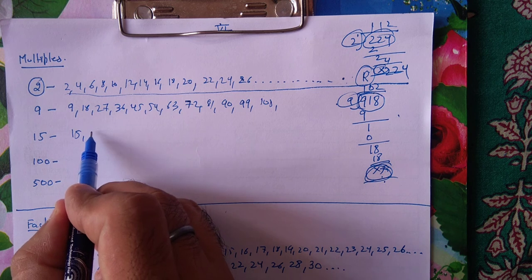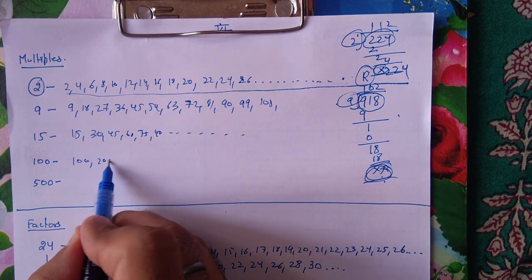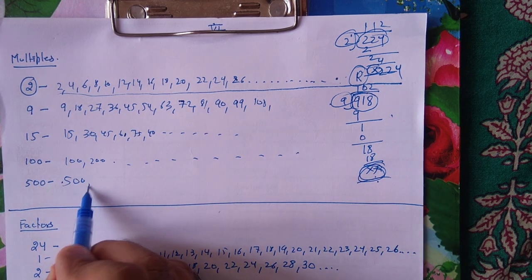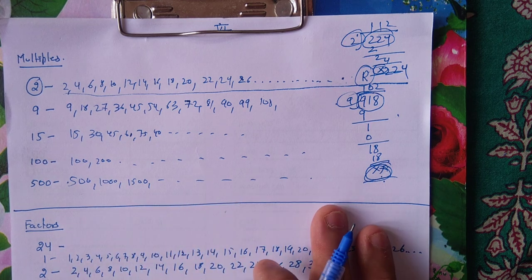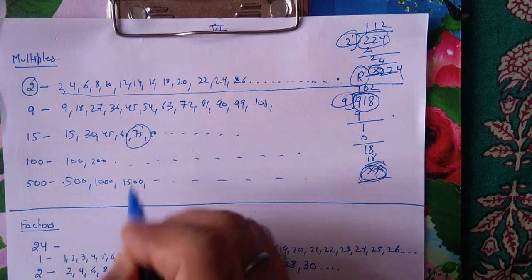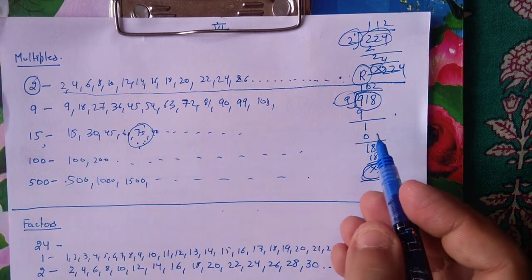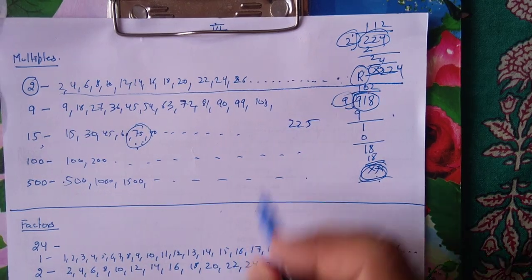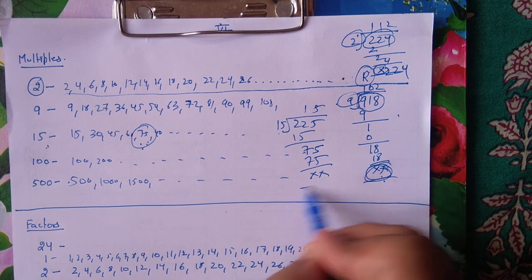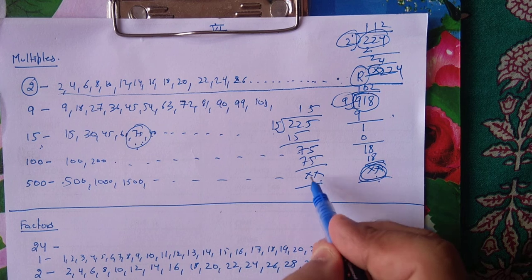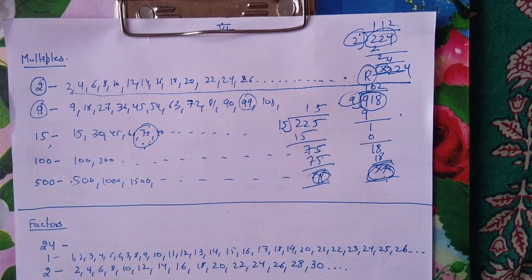Similarly, 15 के multiples होंगे 15, 30, 45, 60, 75, 90 and so on. 100 के होंगे 100, 200, 300, 400. 500 के होंगे 500, 1000, 1500 and so on. अगर पूछो 75, 15 का multiple है की नहीं, तो 15 की table में 75 आता है, so yes. बड़ा number जैसे 225 है, 15 का multiple है की नहीं - 15 से divide करो: remainder 0, so yes यह 15 का multiple हुआ. यह दो तरीके होते हैं पता करने के कि कोई भी number, किसी base का multiple है की नहीं.